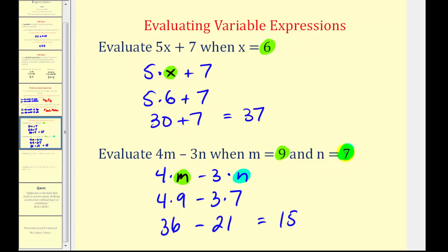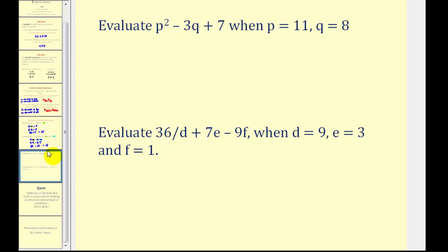Let's try two more of these. Here we want to evaluate p squared minus 3q plus 7 when p equals 11 and q equals 8. So we'll substitute 11 for p and 8 for q. So we'll have 11 squared minus 3 times 8 plus 7.